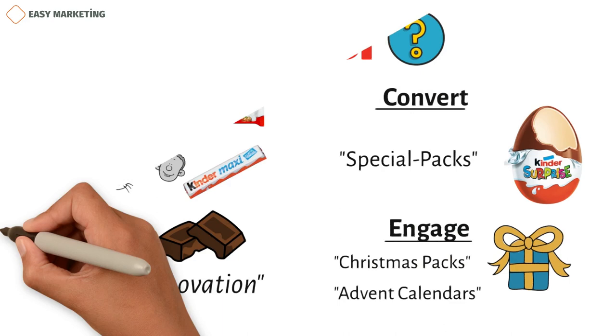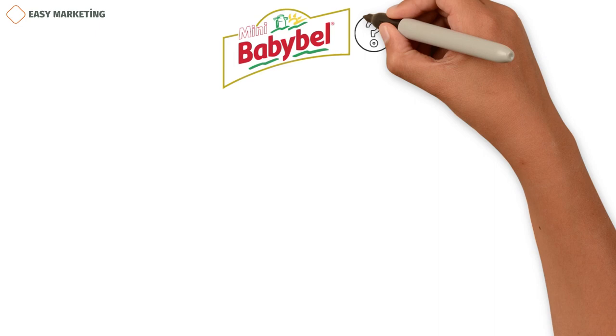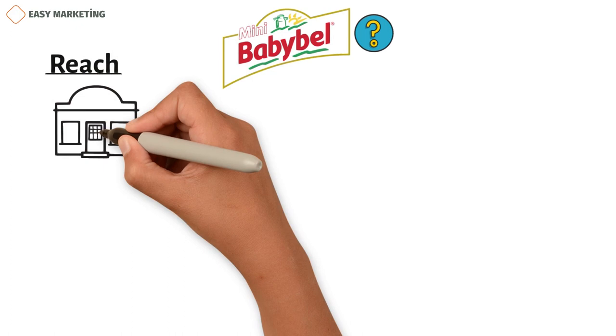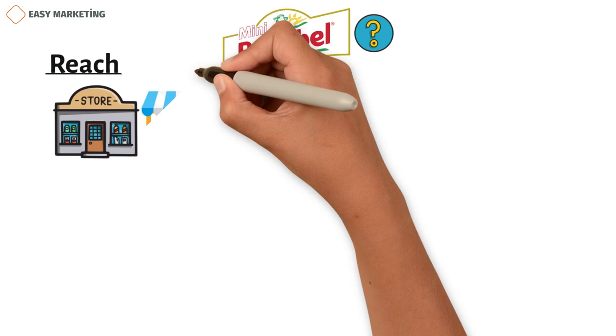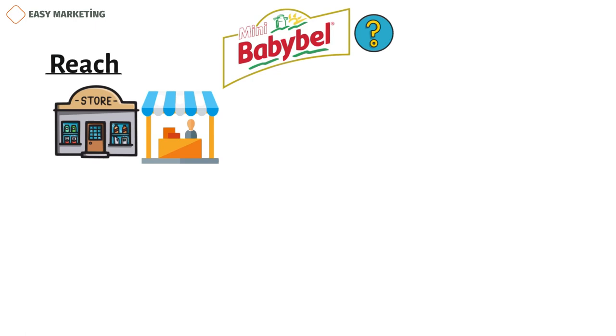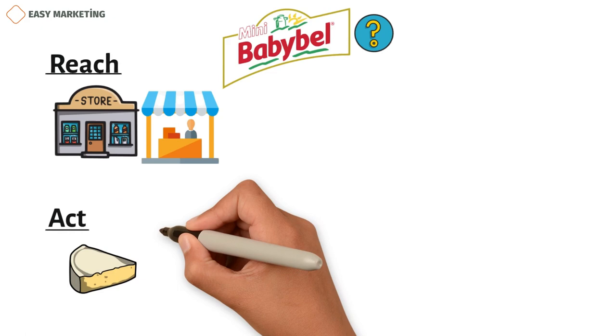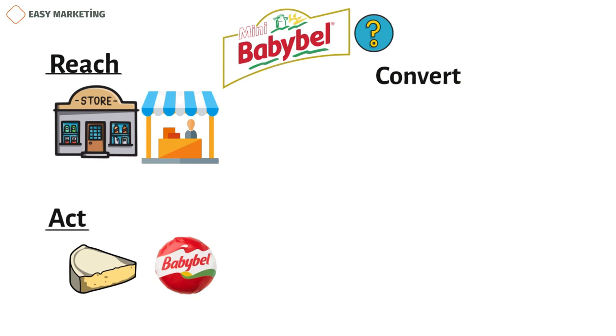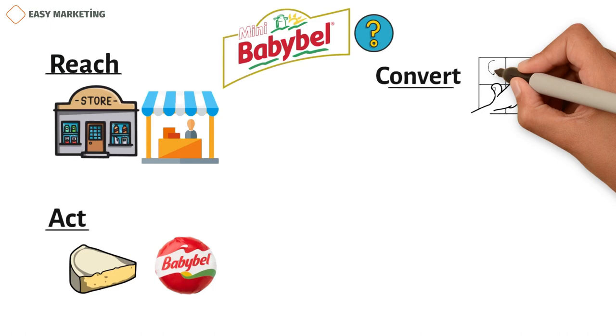Babybel is like Kinder when it comes to chocolate — it's small and mostly made for kids, but almost everyone loves it. Reach: Many people first heard of Babybel in grocery stores, where there was often a Babybel stand and you might get a free sample. Act: Babybel has tried out different cheeses and new ways to package them, making and selling them to the right market based on performance. Convert: They mostly work with people who buy from them often and can be counted on, as well as occasional buyers who have tried their product at a stand.